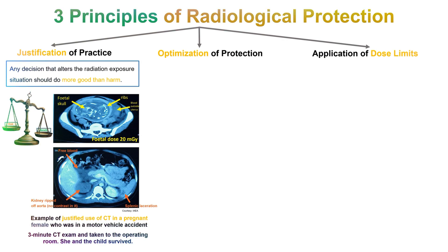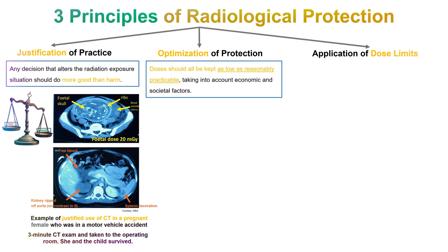Coming to optimization: by saying optimization, we mean or argue that only a minimally practicable amount of radiation exposure should be used. That is, as the definition goes, doses should be kept as low as reasonably practicable, taking into account economic and societal factors. A justified practice must also be optimized — the level of radiation exposures to the general public, the patients, and the staff, that is radiation workers, should be kept as low as reasonably practicable.